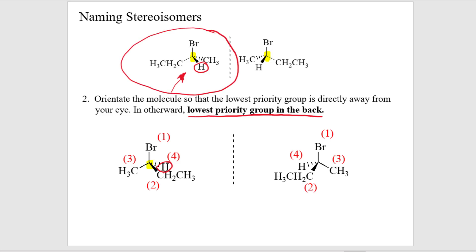What we need to do is take that hydrogen — because right now it's coming right out at us — and as I mentioned, we want to be the driver of the Mercedes. There will be three groups on my Mercedes and I want the lowest priority group going back or away from me. When I look at the molecule, I notice the hydrogen is pointing right at me. So you spin it — keep the bromine at the top but spin the whole thing so that the hydrogen is now in the back. That's step two: place the lowest priority group in the back.